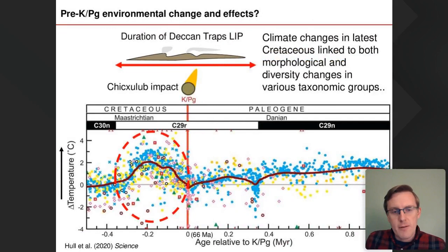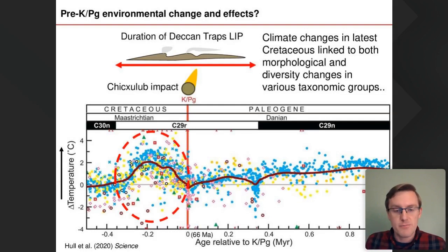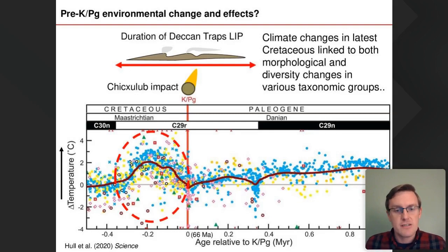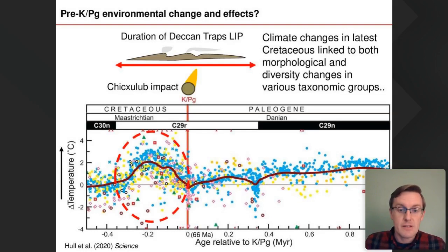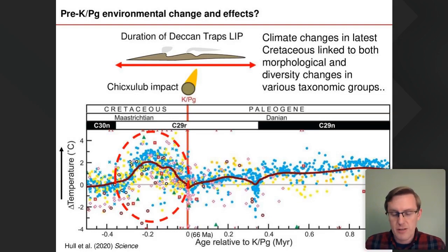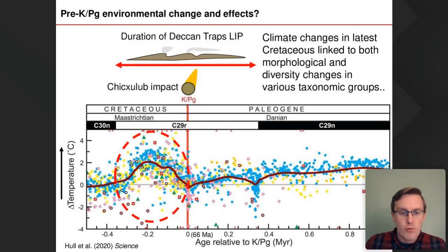When you look at compilations of environmental data in the run-up to the KPG boundary — such as this large temperature compilation put together by Pincelli Hull and colleagues in Science — you see prominent environmental changes in the latest Cretaceous, highlighted with a red circle: a prominent warming and then cooling event in the last few hundred thousand years prior to the boundary and the Chicxulub impact. This correlates with the initial emplacement of the Deccan LIP. These climate changes have been linked to both morphological and diversity changes in various taxonomic groups.